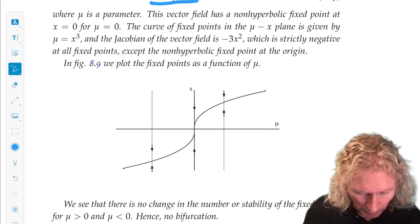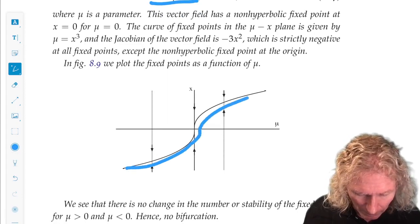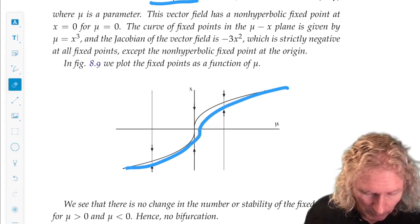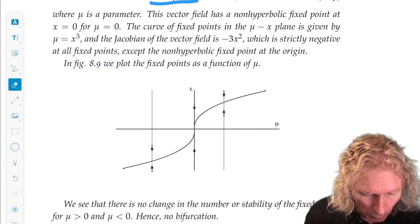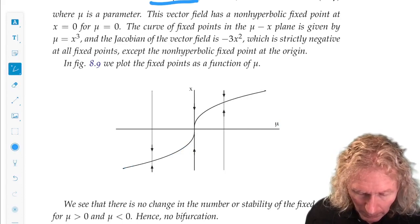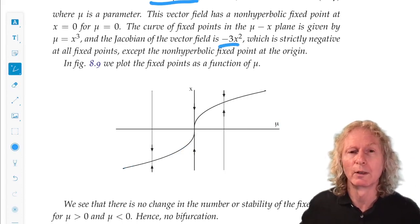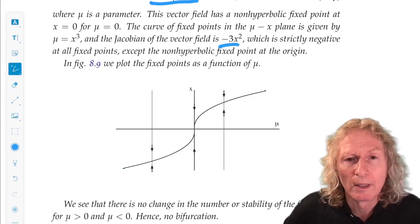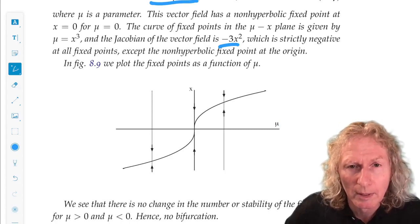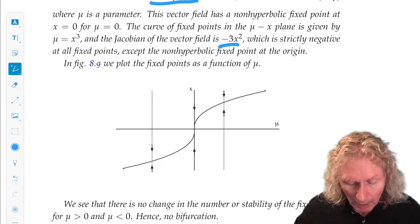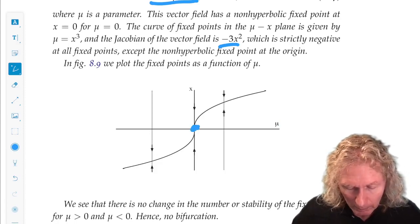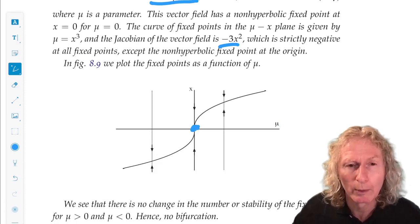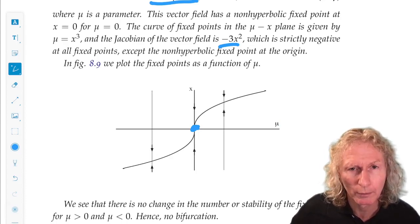So, there is a curve of fixed points we can easily show. And if we compute the Jacobian for any fixed points, it's minus 3x squared. So, it's negative everywhere except at x equals 0. The point x equals 0, μ equals 0 is a non-hyperbolic fixed point.